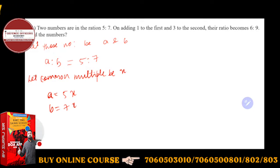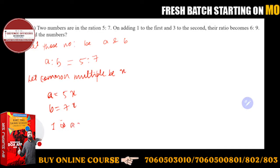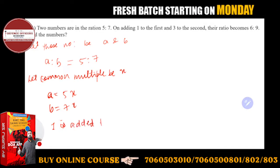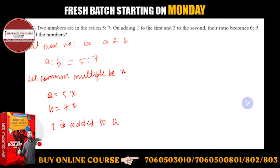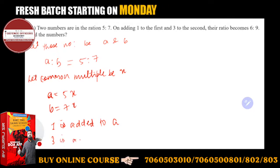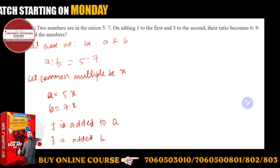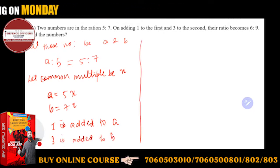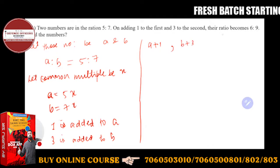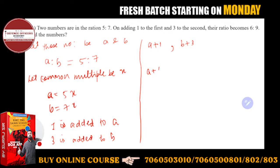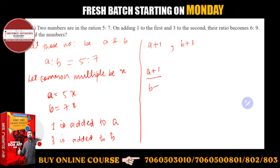Upon adding 1 to the first, now you can do calculation. One is added to a and three is added to b. Now the ratio becomes 6 to 9, then you have to find the numbers.